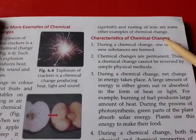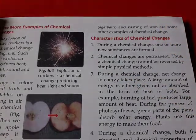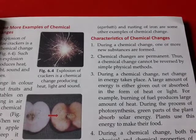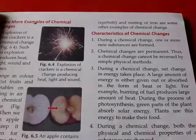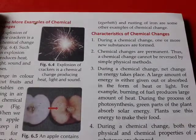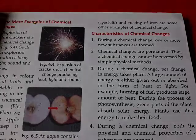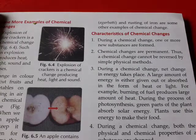All these are examples of chemical changes. In every case, a new product is formed and the original state cannot be recovered. The characteristics of chemical changes are: one or more new substances are formed; this is not visible in a physical change. Chemical changes are permanent.